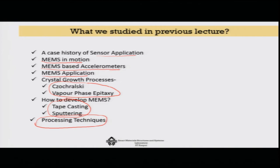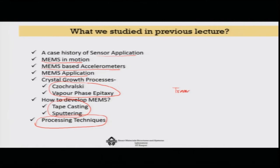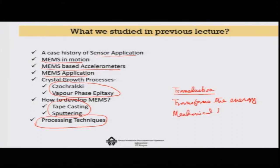There is a very interesting third category coming up with the help of smart materials, because these are the only materials which have this transduction capability. Transduction means a material which can transform energy — for example, mechanical to electrical, or electrical to mechanical. There can also be magnetic effects, photoelectric effects, or light to electrical conversion.